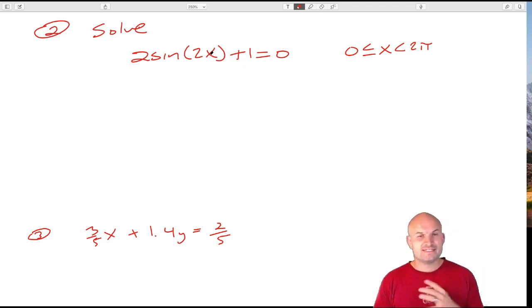So the first thing we need to do is, when we're solving, we're trying to find the values that are going to make the equation true. We need to isolate this sin(2x). We need to isolate the trigonometric function.